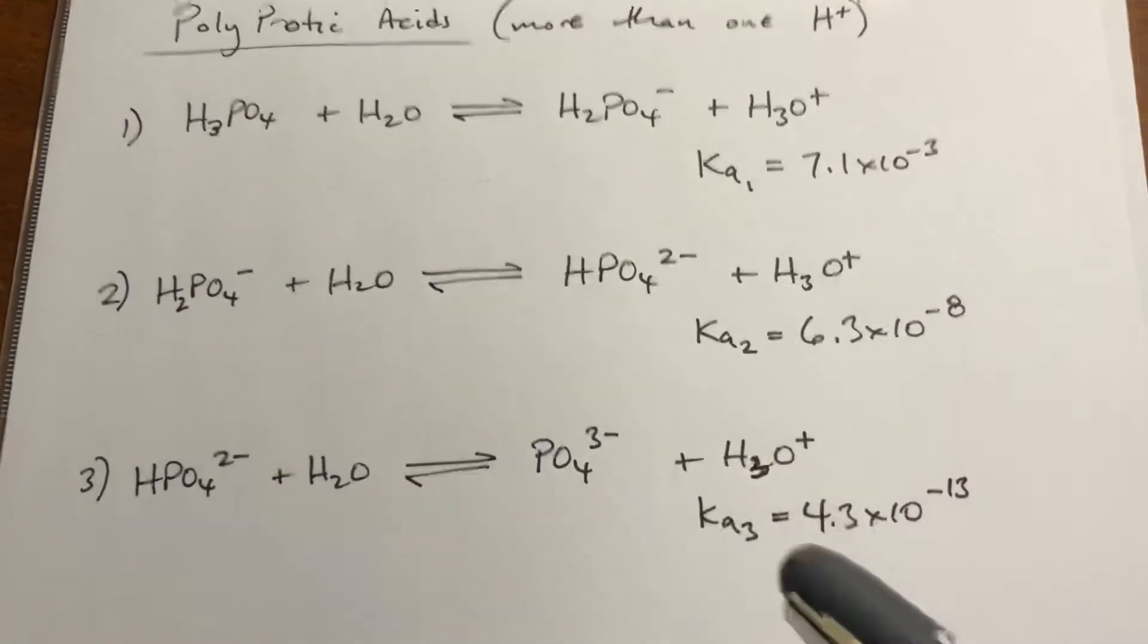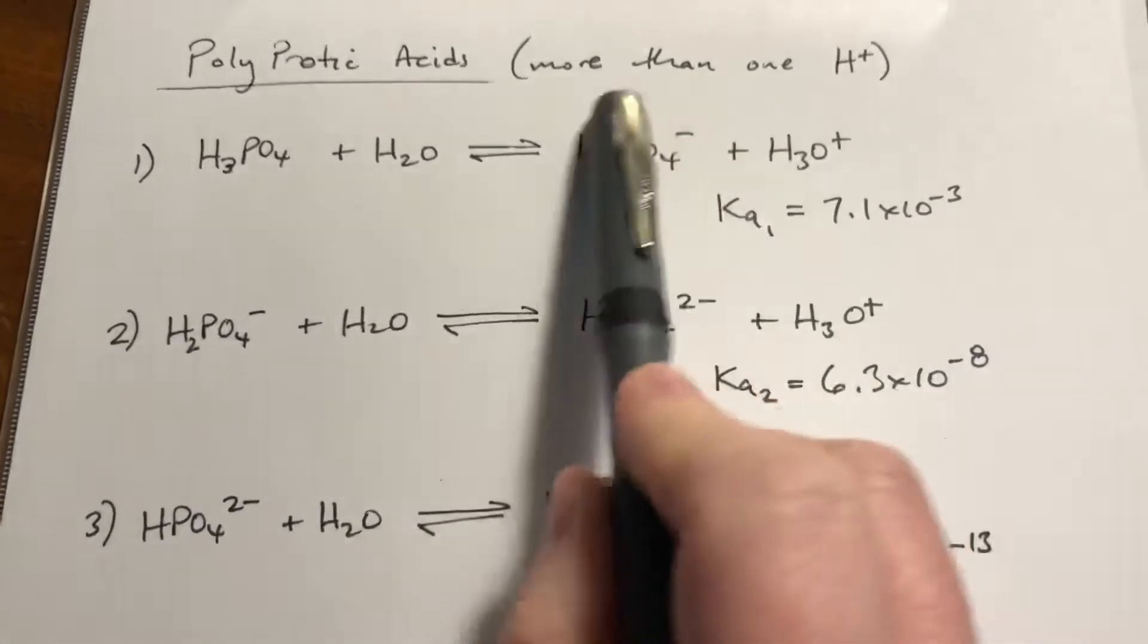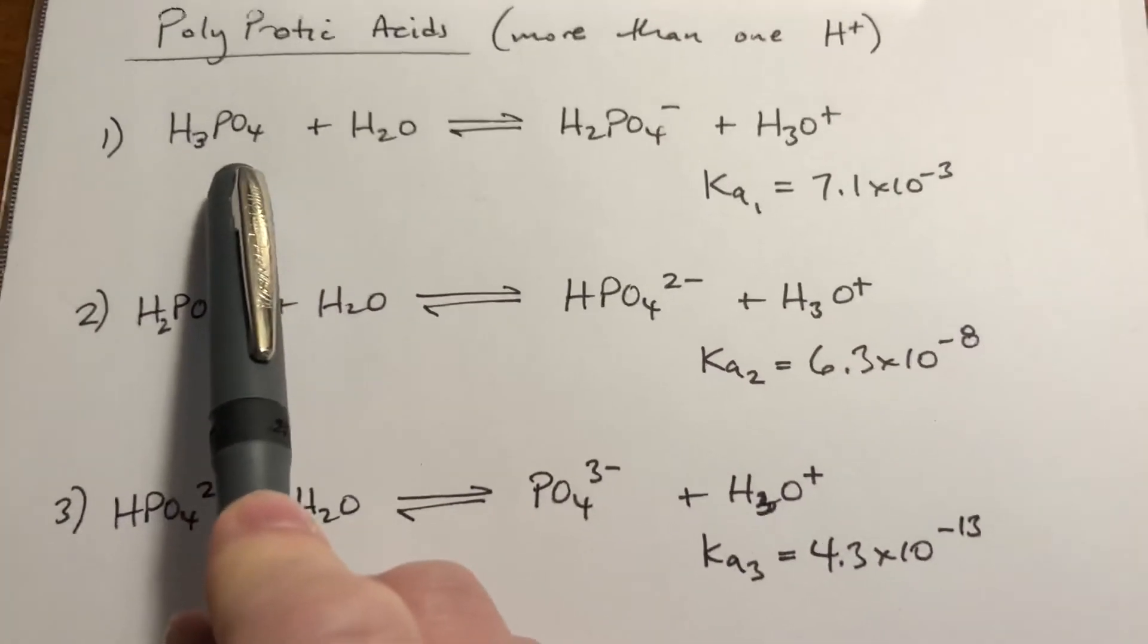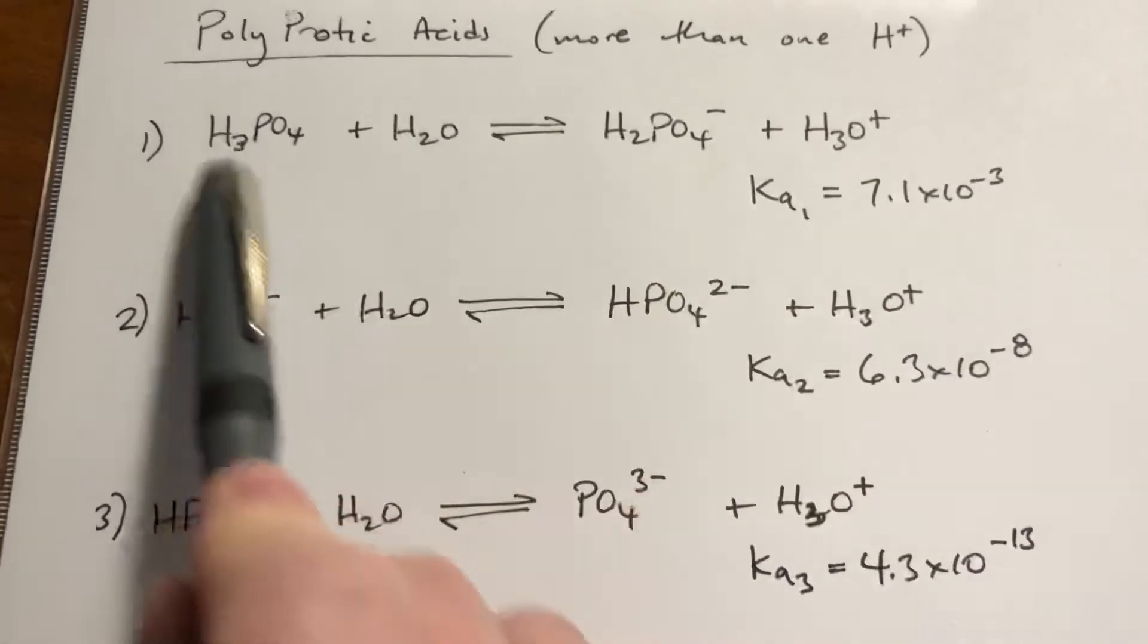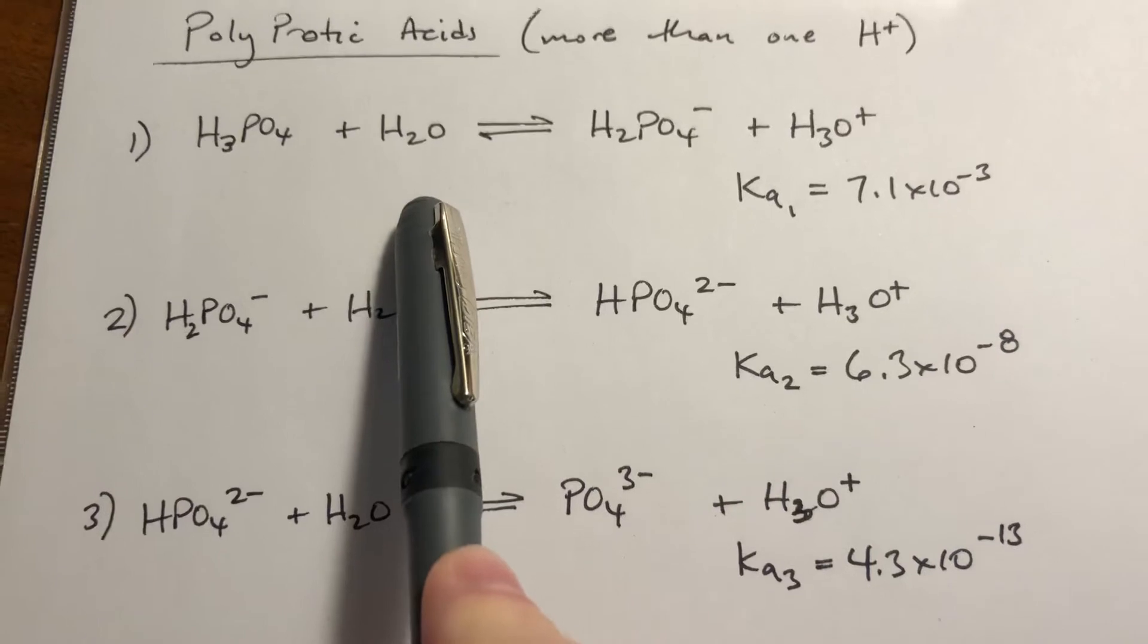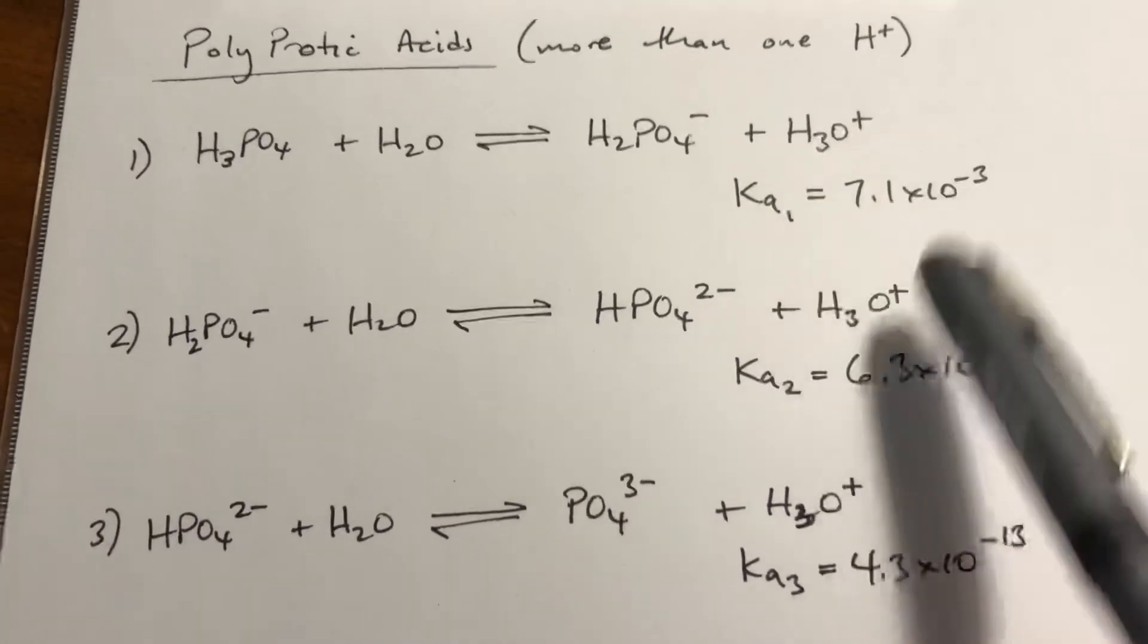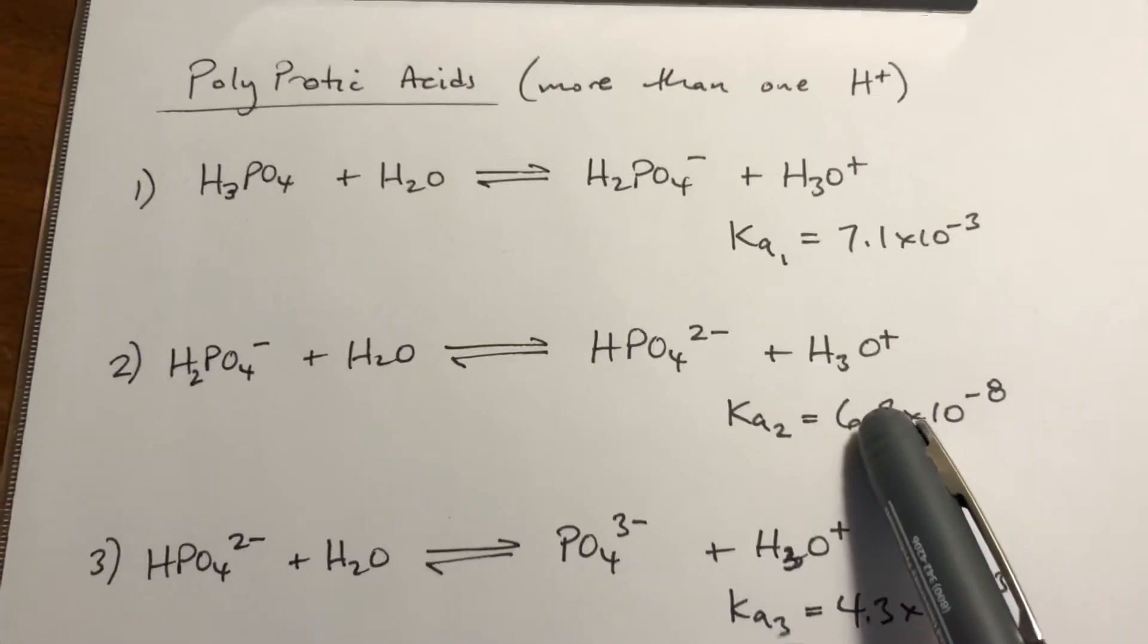So what this really means for us is that even though this thing has three protons to dissolve, or to dissociate, in reality, you're only going to get the first one coming off if you throw this in water. Because for every 10,000 of these, you only get one of these, which means its impact on the pH is going to be absolutely negligible.